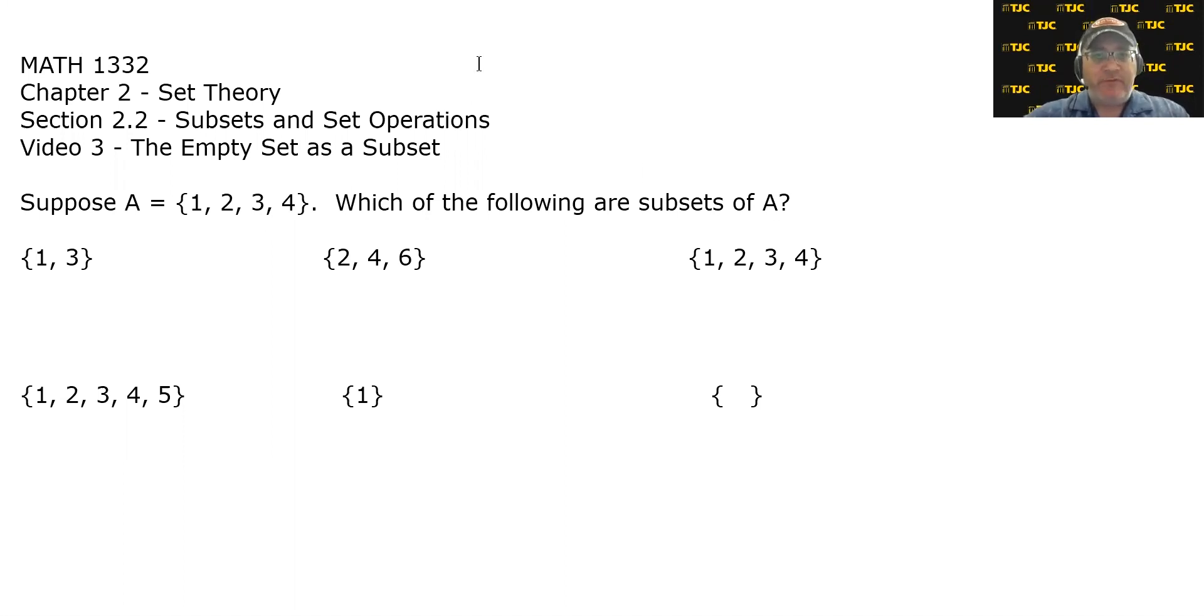So let's start out with a specific set in mind. We are supposing that our set is very simple. Set A contains the numbers one, two, three, and four. And the question is simply, which of the following are subsets of A? Notice I didn't say proper subset, just subsets.